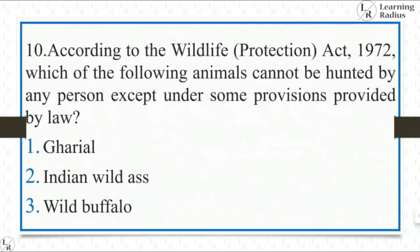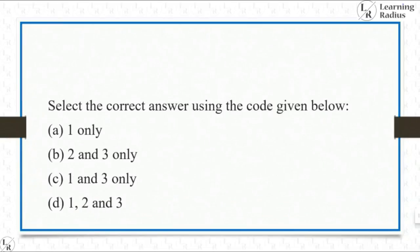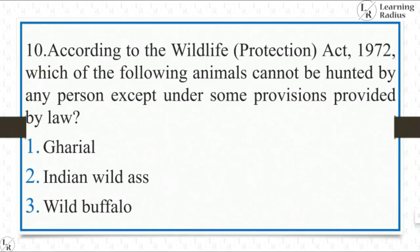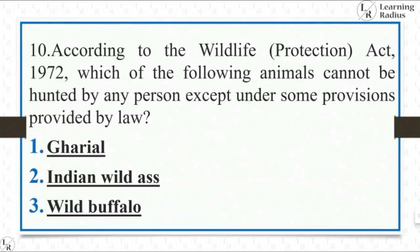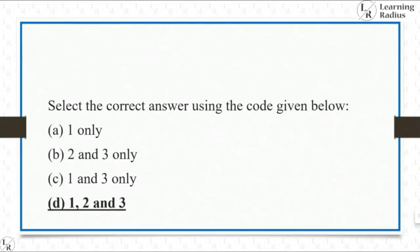According to the Wildlife Protection Act 1972, which of the following animals cannot be hunted by any person except under some provisions provided by law — Gharial, Indian wild ass, wild buffalo? Gharial cannot be hunted, Indian wild ass cannot be hunted, wild buffalo cannot be hunted. All three cannot be hunted, so the answer is D, one, two and three.